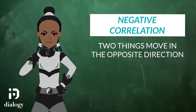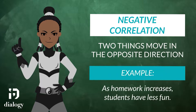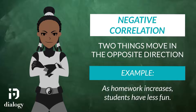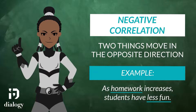A negative correlation means that two things move in the opposite direction — as one thing increases, the other thing decreases. We could say that homework has a negative correlation with fun. This would mean that the more homework students have, the less fun they will have.